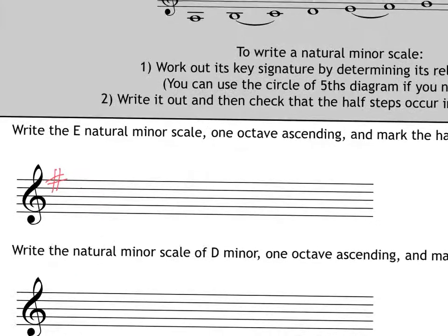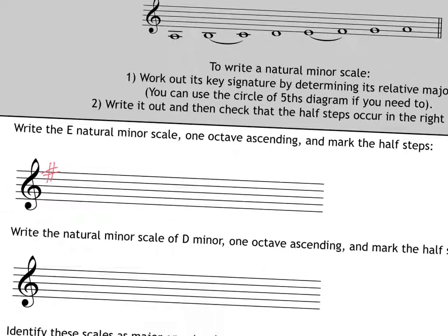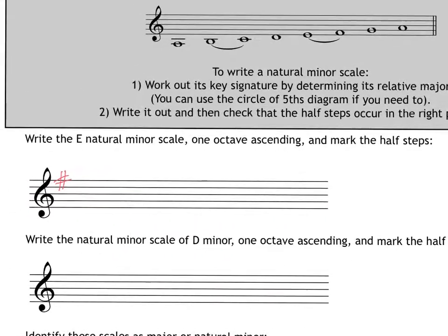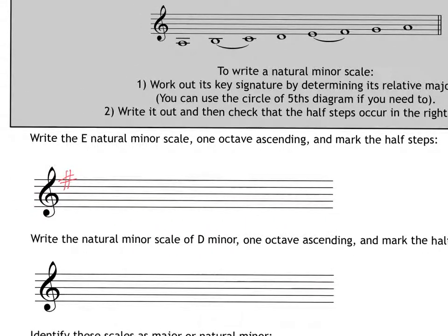And then one octave ascending, and mark the half steps. Okay, well, one octave ascending. What scale are we doing? We wrote the key signature, sorry, we wrote the key signature of one sharp. Now, you might automatically think, well, hang on, that's the key signature of G major. Yes, it is, but it's also the key signature of E minor. So, when we want to write one octave of this scale, we want to start on the note E, because that's the scale we are writing. We're drawing an E minor scale.